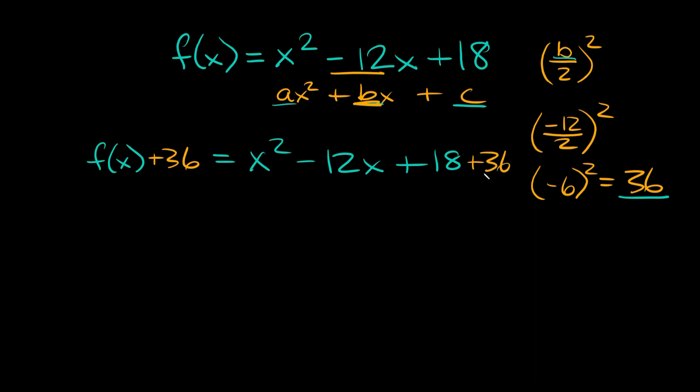Now the thing here is, this 36 you don't want to tack on to the very end. What you want to do is put this next to whatever number is in the middle next to the single variable x. So I'm going to take out this 18, put the 36 there instead, and then put + 18 at the very end.